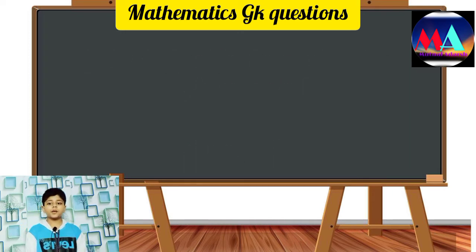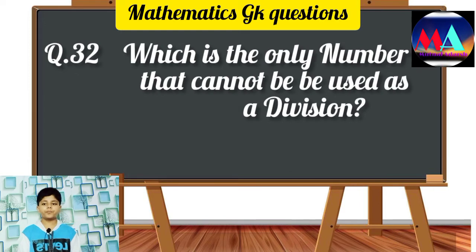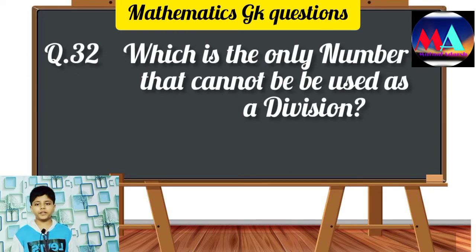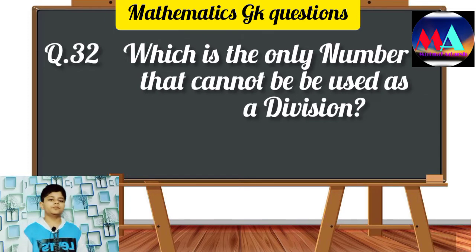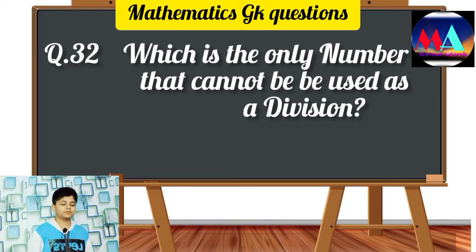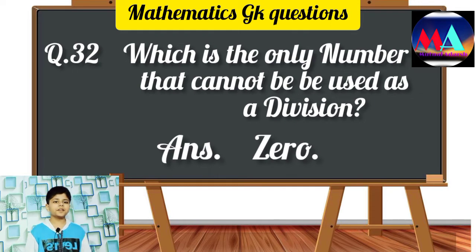Question number 32: Which is the only number that cannot be used as a divisor? Answer: 0.